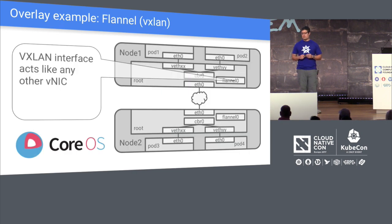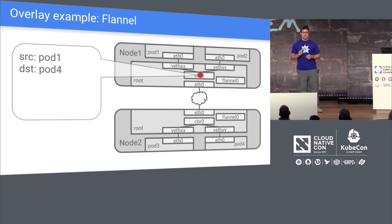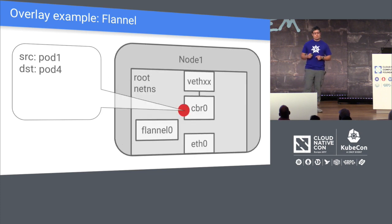Let's take a look at an example overlay network — one provided by CoreOS called Flannel. It's fairly straightforward. You notice there's a new virtual Ethernet device called the Flannel Zero device, added to our root namespace. Pod one is now going to send a packet to pod four. It goes through the same process as before, hits the bridge, but now when it hits the bridge something interesting happens. Ethernet Zero and the network between the nodes doesn't know anything about pod IP addresses — but the Flannel Zero device does.